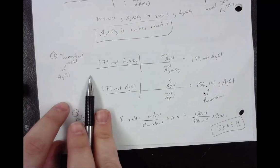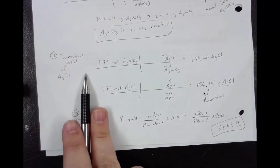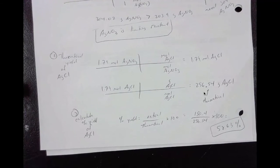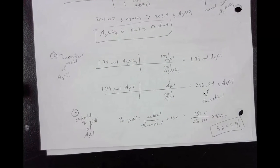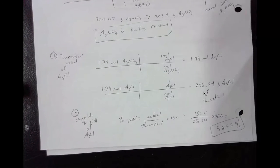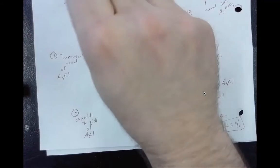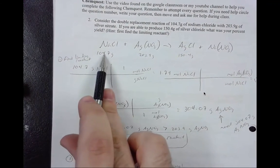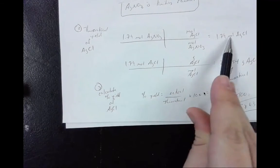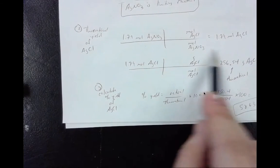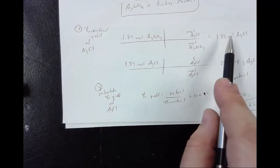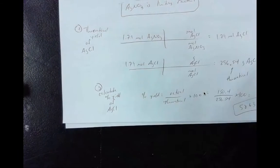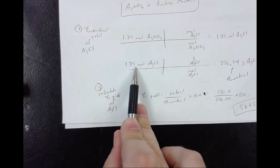So now, once we have our limiting reactant, we can calculate our theoretical yield of AgCl. We have to use the limiting reactant because we're going to run out of AgNO3, silver nitrate, before we use up all of the silver chloride. So that's what I was pointing right here. We're going to use up all of this before we use up all of this. That way, when we calculate the moles, we have to use the moles of silver nitrate. And the reason why is because it's going to run out first. And you don't want to be doing calculations where you'll have more than you actually have.